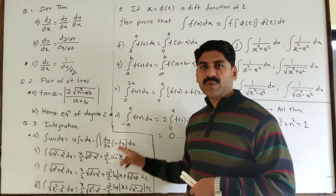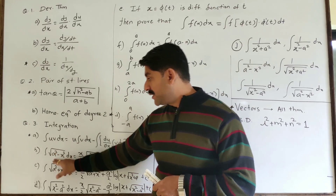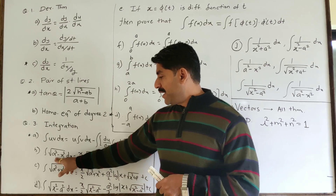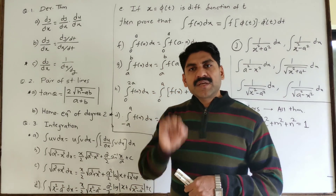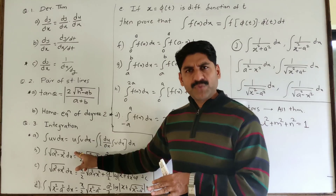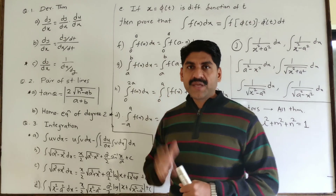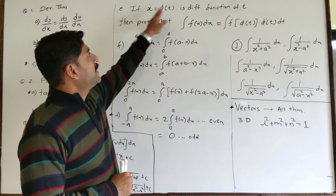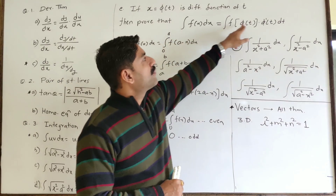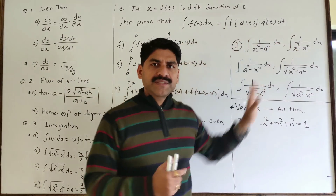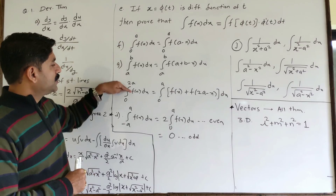For integration, I have a lecture on integration by parts, where I have three properties: integration of root of a-square minus x-square, a-square plus x-square, x-square minus a-square. Proof and properties are covered. For substitution, if x equals phi of t, then the integral of F of x dx equals F of phi of t times phi-dash dt. This is the method of substitution — the change of variable.